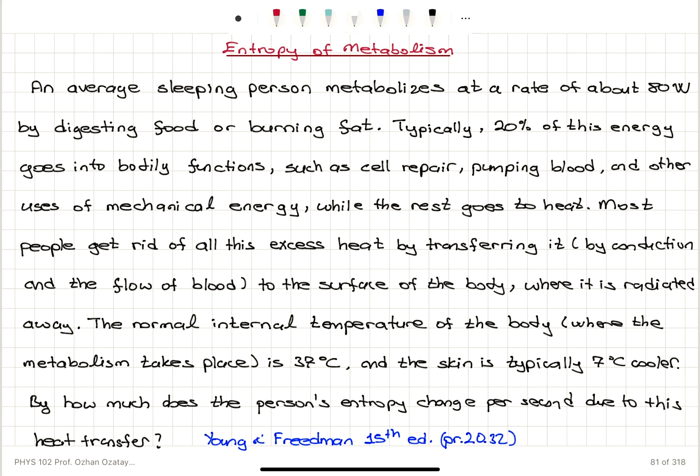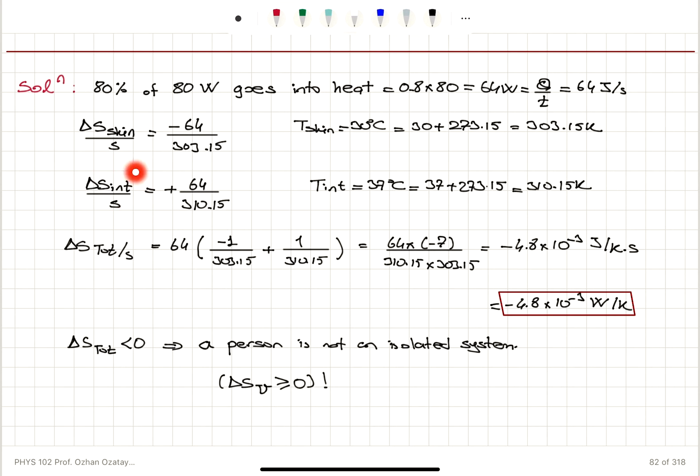The temperature difference between the internal temperature, 37 degrees Celsius, and the skin, 30 degrees Celsius, is 7 degrees Celsius temperature difference. How much does the person's entropy change per second due to this heat transfer? In the interior, we are producing 64 watts of power at a temperature of 310.15 Kelvin. So delta S interior is Q divided by T, constant temperature. And at the skin, we are radiating away 64 watts power at a constant temperature, 303.15 Kelvin.